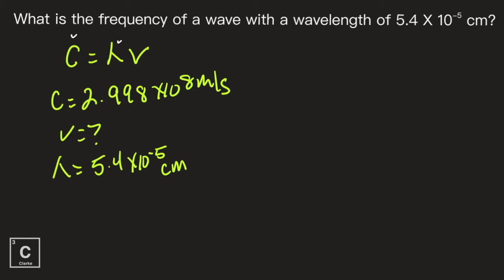I need to go from centimeters to meters. Great mighty King Henry died by drinking chocolate milk under nice, pretty flowers — that's the metric prefix mnemonic. Before I can even start working my problem, I need to convert 5.4 times 10 to the negative 5 centimeters into meters.